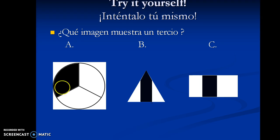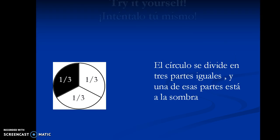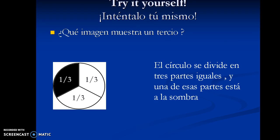So, let's try it ourselves. Which of these images below shows an example of one third? Un tercio. So, take a minute and think about it. Alright. Well, the answer is... The circle shows an image of one third. The circle is divided into three equal parts, and one part of the circle is shaded in. So, this right here is one third, or un tercio.